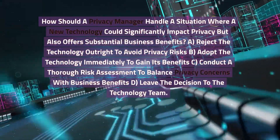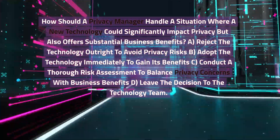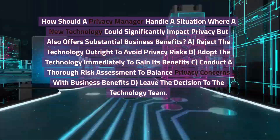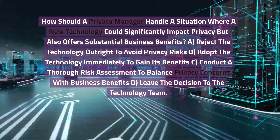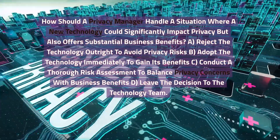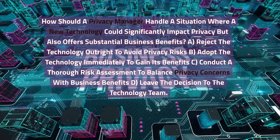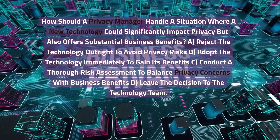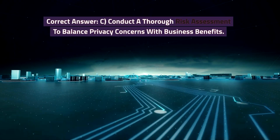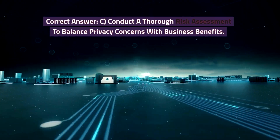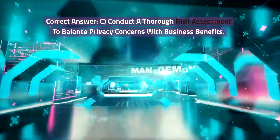How should a privacy manager handle a situation where a new technology could significantly impact privacy but also offer substantial business benefits? A. Reject the technology outright to avoid privacy risks. B. Adopt the technology immediately to gain its benefits. C. Conduct a thorough risk assessment to balance privacy concerns with business benefits. D. Leave the decision to the technology team. Correct answer: C. Conduct a thorough risk assessment to balance privacy concerns with business benefits.